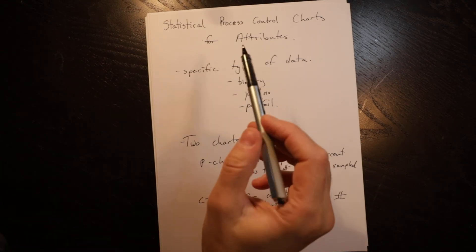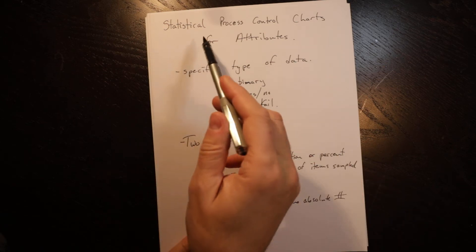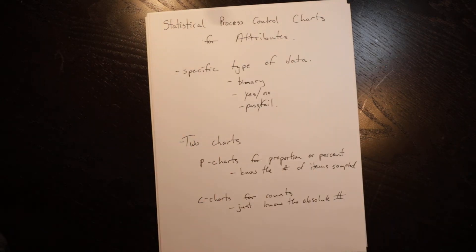Hello, this video is to show you how to do statistical process control charts for attributes and how to differentiate between the two if you're given a problem that includes a statistical process control chart for attributes.